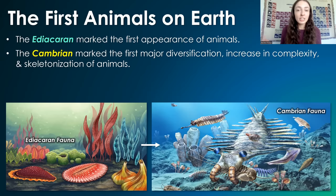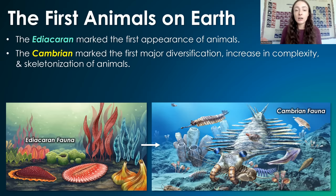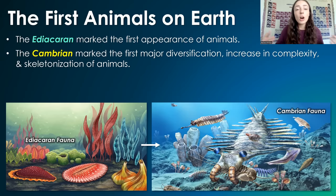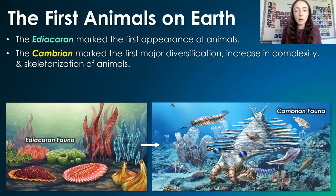there was a major diversification and increase in complexity and skeletonization of these early animals. Skeletonization just refers to the animals producing more hard parts — skeletons, shells, etc. — rather than just being soft-bodied jelly-like organisms.